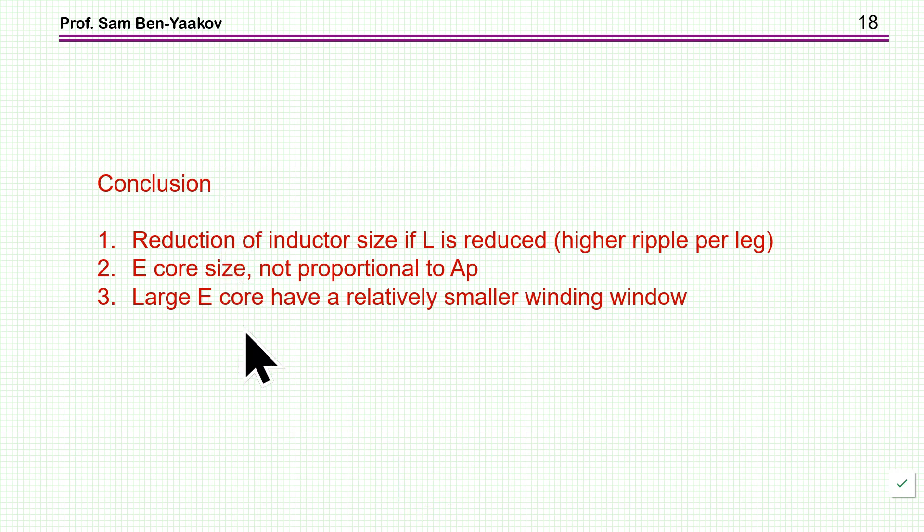So what are the conclusions here? In a multi-phase system we would have a reduction of the total size of inductances, that is the total AP, only if we allow a higher ripple per leg. Okay, in this case the total AP will indeed be smaller because we allow a higher ripple, so the inductance per phase is smaller. In E-cores, we found that the size is not linearly proportional to AP but rather has some exponential relationship. And therefore, if you split the single inductor of the single phase into a multi-phase inductor, the size will be somewhat larger. The total size will be somewhat larger than the size of the single inductor of the single phase. And then we found that large E-cores have a relatively smaller winding window, which means that you'll have fewer number of turns in the window.